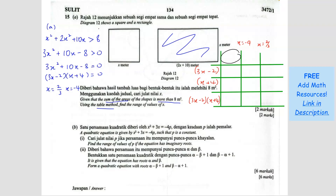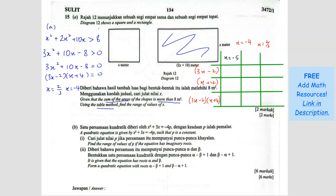For the region less than x equals negative 4, we assign x equals negative 5. For the region between negative 4 and 2/3, we use x equals 0. For the region greater than 2/3, we use x equals 1. We only need the sign — positive or negative — not the actual value.